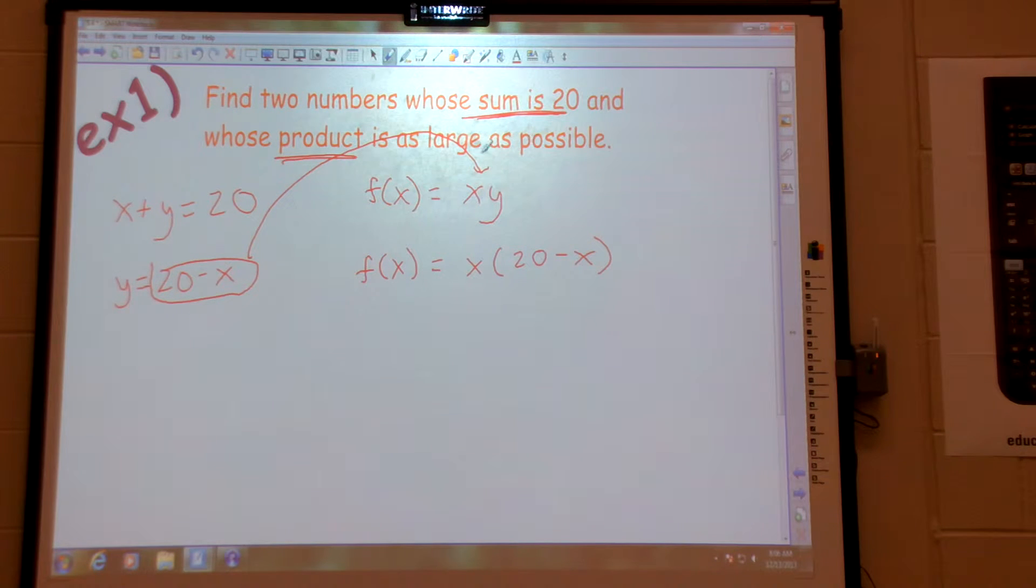But the first step, a lot of people get confused. They try to write down too many equations. Write down your f of x is what you are trying to maximize and minimize. That's the first thing you should write down. And then see if you need to eliminate a variable.